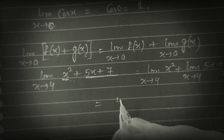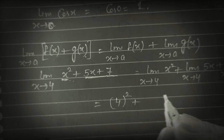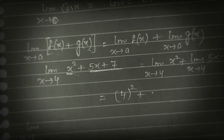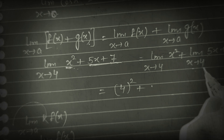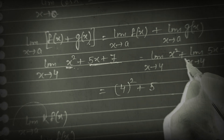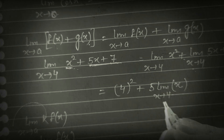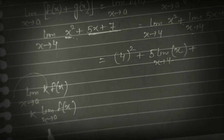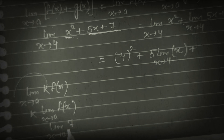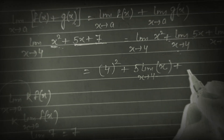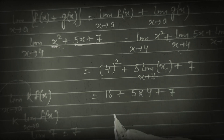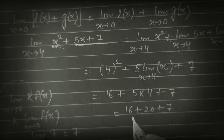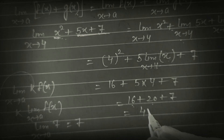If we put x = 4 in x², it is 4² = 16. And for 5x: 5 is a constant, so we take it outside — limit x tends to 4 of x, giving 5×4 = 20. For constant 7: limit has no effect on a constant, so it remains 7. Total: 16 + 20 + 7 = 43.